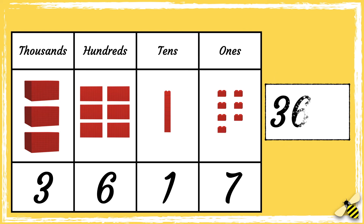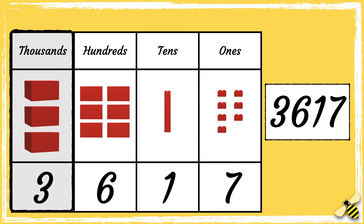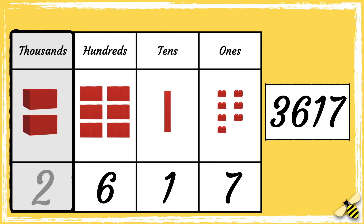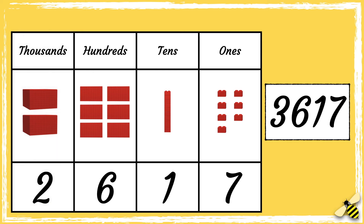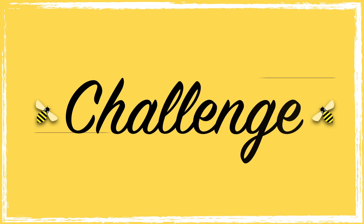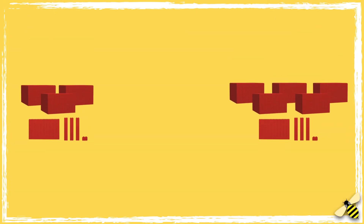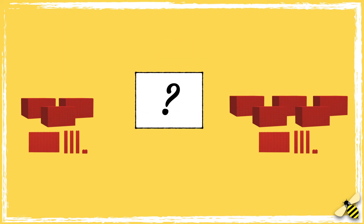Let's have a look at one more example. Here is the number three thousand six hundred and seventeen. When we take away a thousand from a number, we need to look at the thousands column. Three thousands becomes two thousands, so the new number is two thousand six hundred and seventeen.